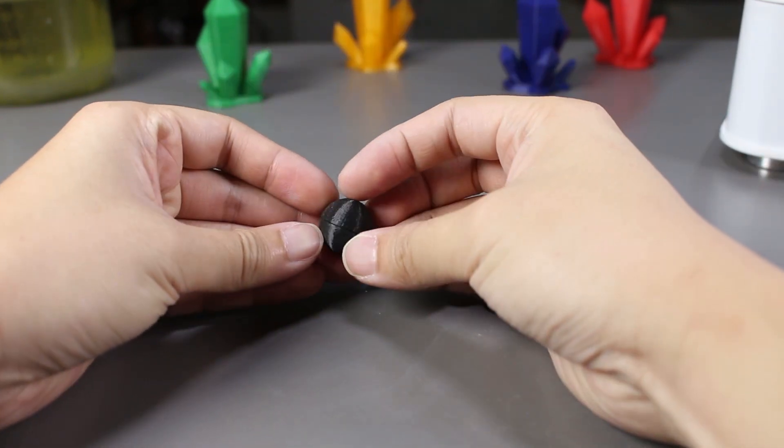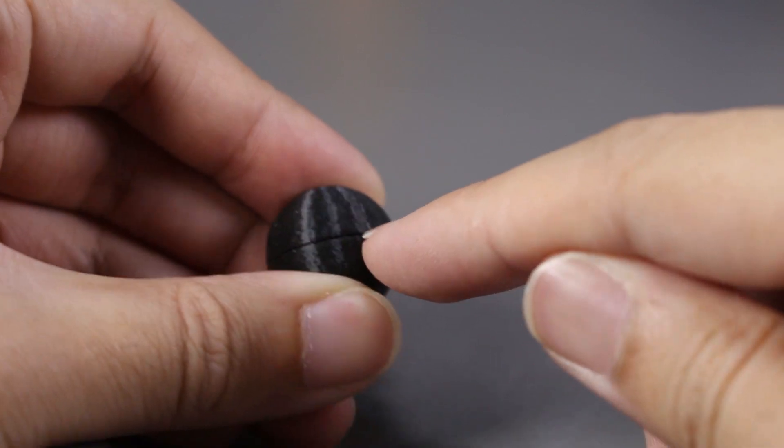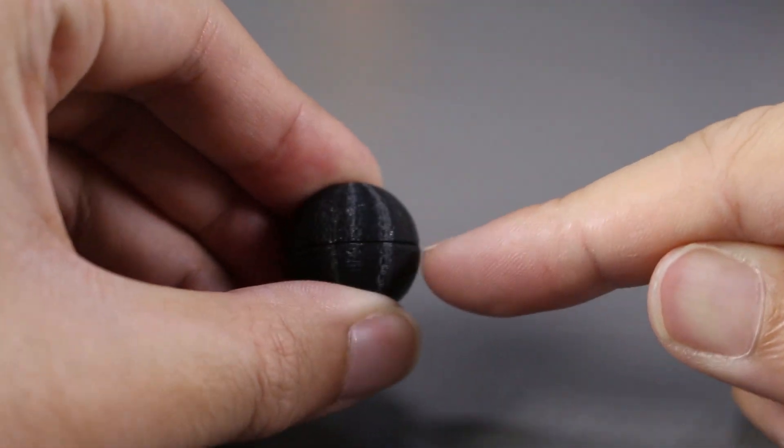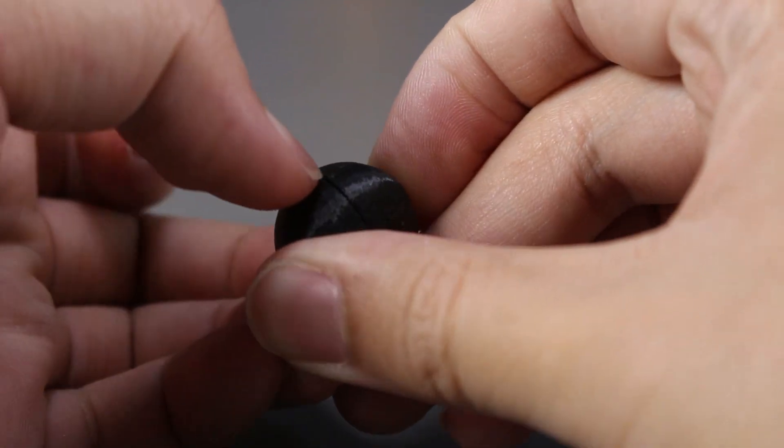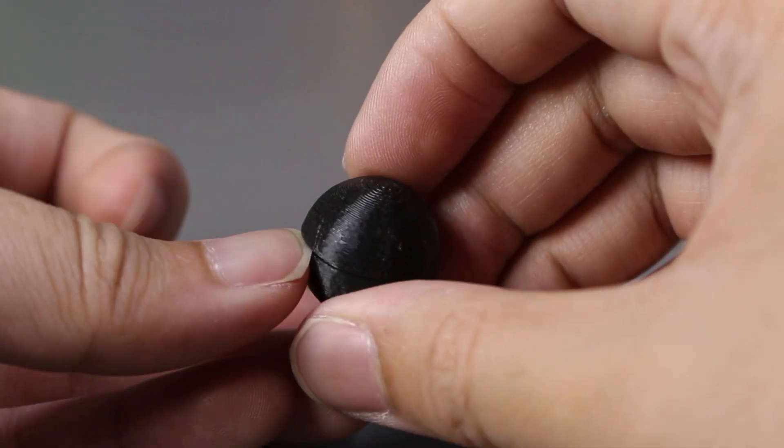First of all, let's take a look at the ball. This print was printed in two pieces and then stuck together with some glue. We can see here that there is a slight gap in between the two pieces that my fingernail can actually fit into.